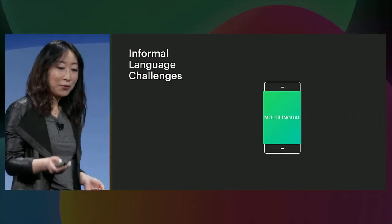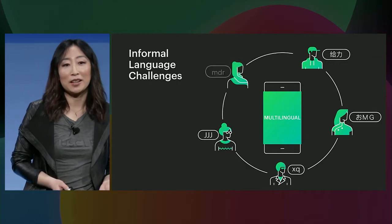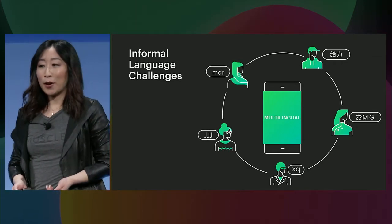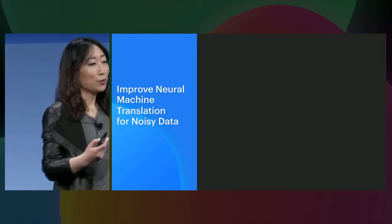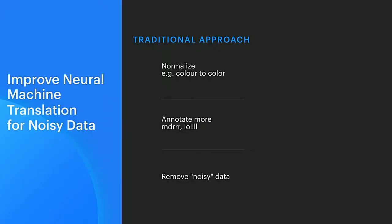Such dynamic and diverse nature of language does not exist just for English — it's common across many languages. Traditionally, the approach is to consider user-generated content as noisy data and normalize it, for example converting British English to U.S. English. If there are new words, we generate new labels to annotate them, or eventually just throw them away from our training data. Here, we are taking a very different approach by acknowledging that this is real language people use every day in conversation. So we need to develop more robust and scalable machine learning models.